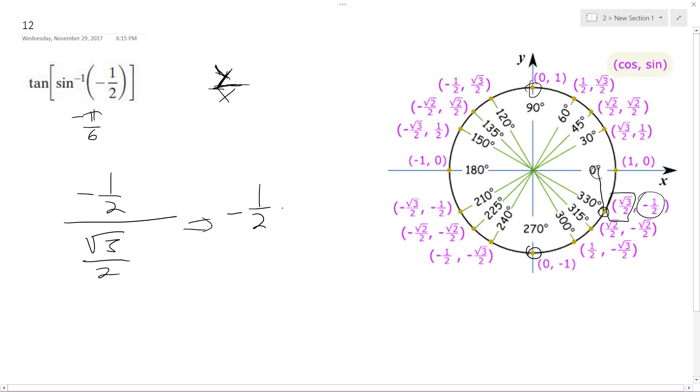So you divide, the fraction on the bottom is the same thing as doing 2 over root 3. 2's cancel out, we get negative 1 over root 3. Probably want to rationalize the denominator. So what we end up with is negative root 3 over 3.